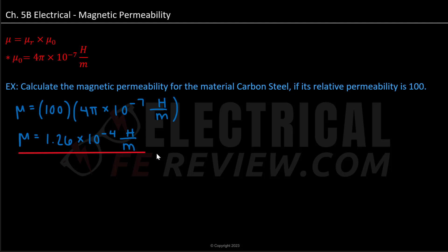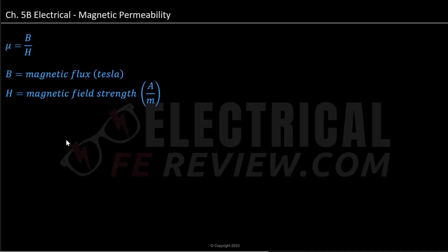Let's clear the board to look at another relationship for magnetic permeability. Another way we can define magnetic permeability is using the relationship between magnetic flux, denoted as B, over magnetic field strength, denoted as H. Magnetic flux is given in units of Tesla, and magnetic field strength is given in amps per meter.